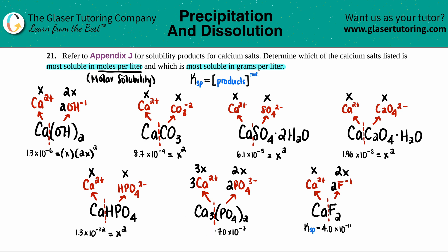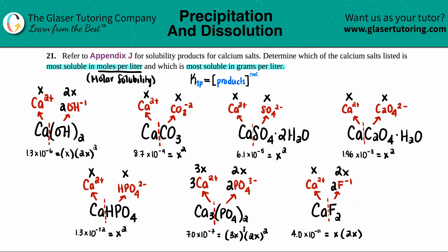For calcium phosphate, Ksp is 7.0 × 10⁻⁷. This one's a bit more complex: it equals (3x)³ times (2x)², with 3x raised to the third and 2x raised to the second. For calcium fluoride, Ksp is 4.0 × 10⁻¹¹, which equals x times (2x)², with the 2x raised to the second power.